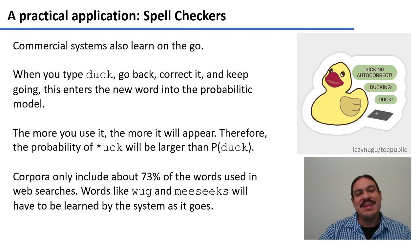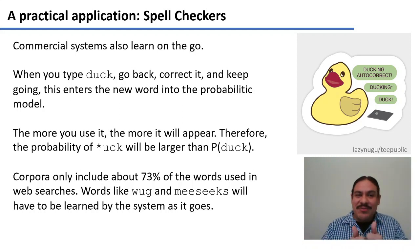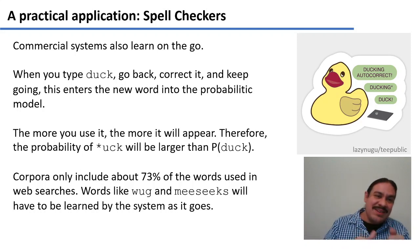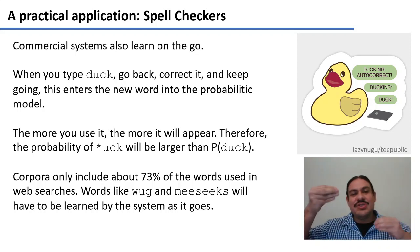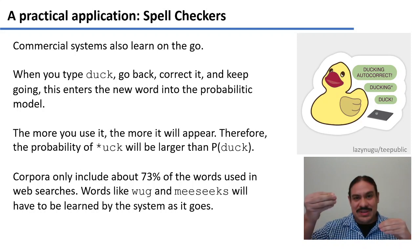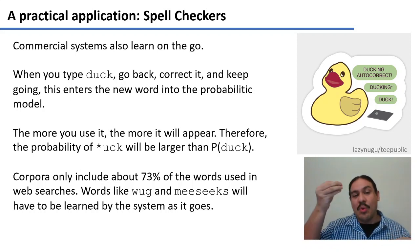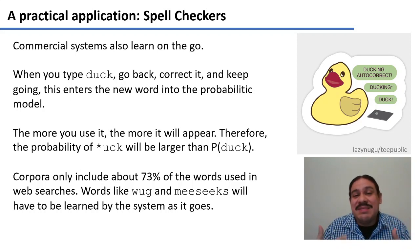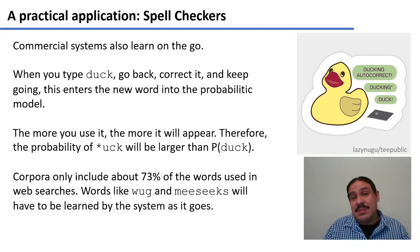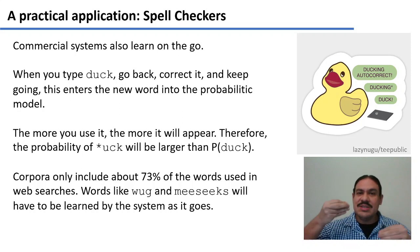Commercial systems always need to be learning, because they're always going to be bumping into new words. In your cell phone, when you type a word and get auto-corrected to 'duck', you go back and correct it manually — this changes the internal probabilities. This is how your phone learns to give 'duck' less probability and the other word more probability. Corpora really only include about 73% of the words actually put in web searches, so the system needs to update its probabilities as it encounters new words like 'woog' or 'meeks'.